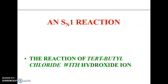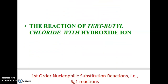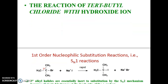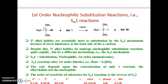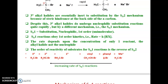For SN1 reactions, consider tert-butyl chloride reacting with hydroxide. Tertiary alkyl halides are essentially inert to substitution by the SN2 mechanism due to steric hindrance at the back side. Despite this, tertiary alkyl halides undergo nucleophilic substitution quite rapidly by a different mechanism — SN1 (substitution nucleophilic unimolecular first order).